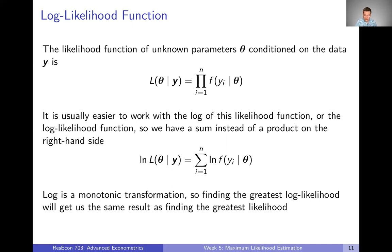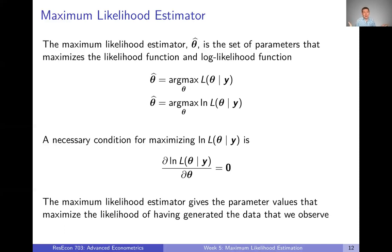We've defined this likelihood function, which thinks about the parameters as our variables and the y's as known. Normally it's easier to work with the log of this likelihood function — the log likelihood function. In the likelihood function we have a product on the right-hand side, but because of the nature of logs, logging it gives us sums instead of products, which are easier to work with. Because log is a monotonic transformation, finding the greatest log likelihood is equivalent to finding the greatest likelihood — they occur at the same point.